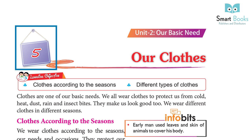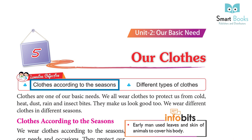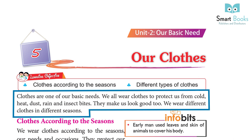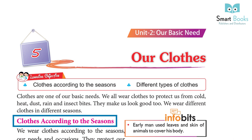Unit 2: Our Basic Needs. Chapter 5: Our Clothes. Learning objective — clothes according to the seasons, different types of clothes. Clothes are one of our basic needs. We all wear clothes to protect us from cold, heat, dust, rain, and insect bites. They make us look good too. We wear different clothes in different seasons.